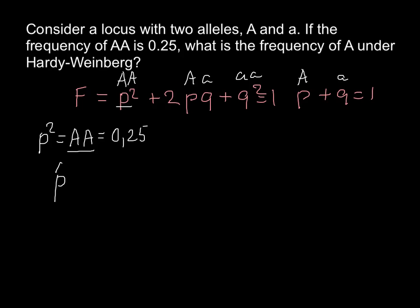So here it is, this would be just the square root of p squared, that is 0.25. And the answer here would be 0.5. This is the frequency of the p allele, or dominant allele, that is capital A in this example. So this is our answer.